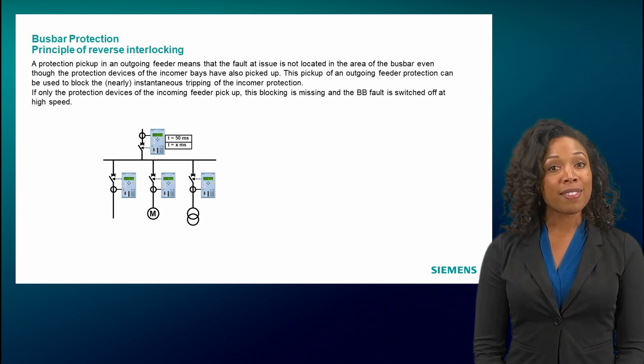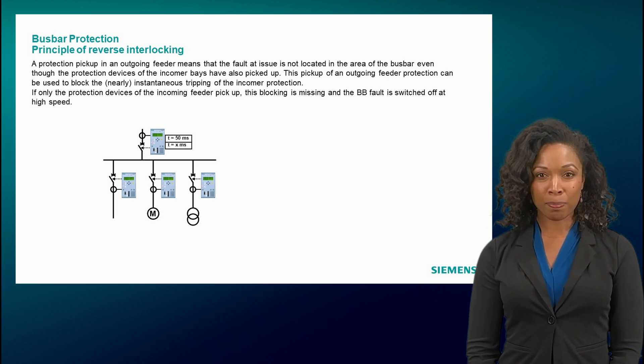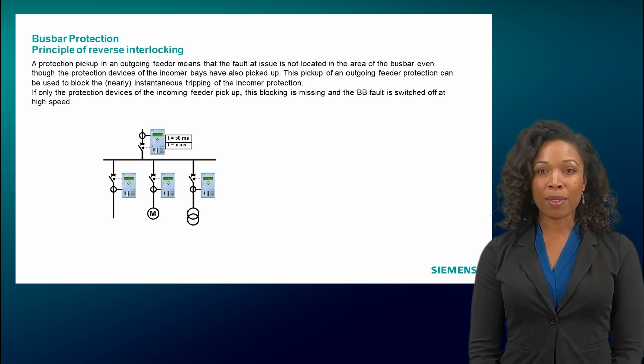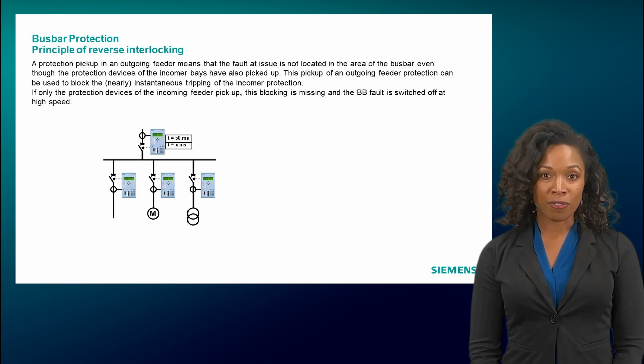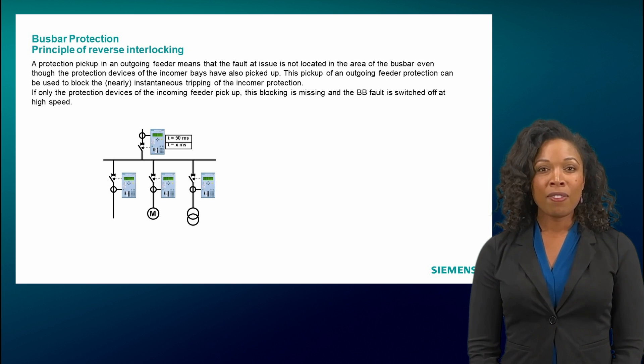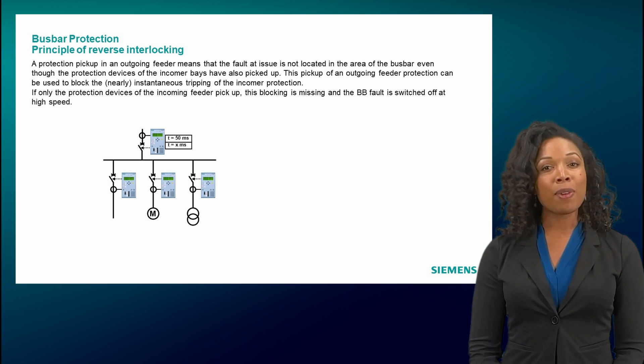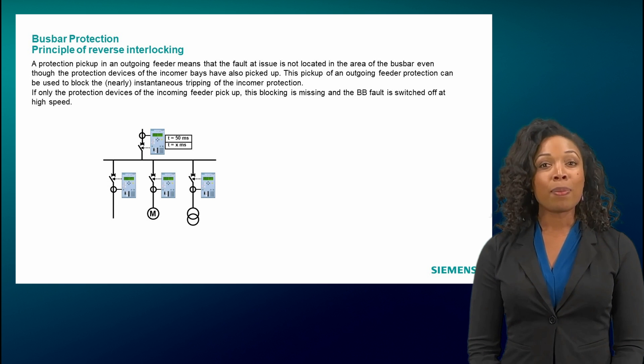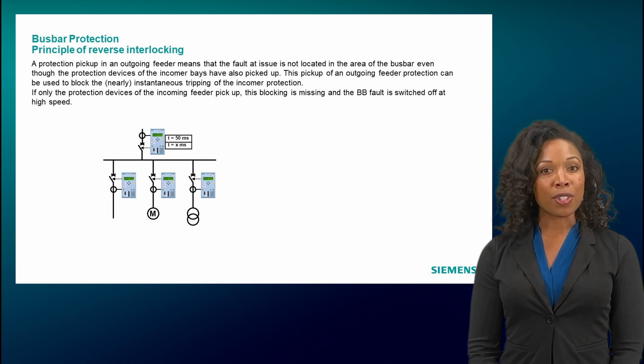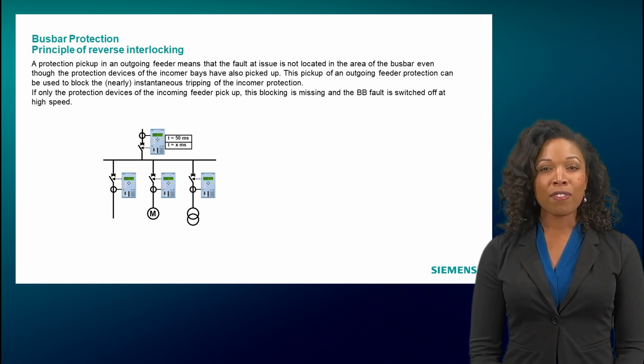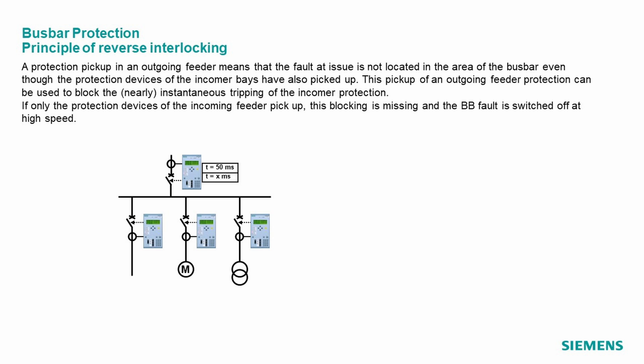For feed-in protection, the two objectives are in contradiction, because the busbar protection requires in the best case an immediate tripping, which would have the consequence that in the event of a fault in the outgoing feeders, a selective tripping of the feeder can no longer take place. Without a reverse interlock, the protection concept will therefore be such that the tripping time in the feed is increased — meaning an increased tripping time is accepted in the event of busbar faults. The contradiction can be resolved by giving the incomer feeder protection information on which it can distinguish whether it is a fault in the outgoing feeder, and therefore the incomer feeder protection is only the backup protection with an increased tripping time, or whether it is a busbar fault with the aim of tripping it as quickly as possible.